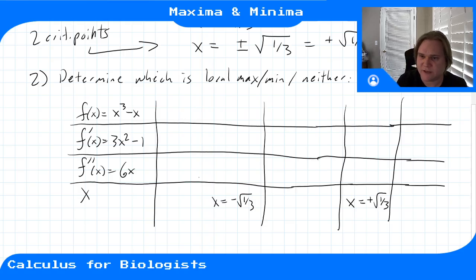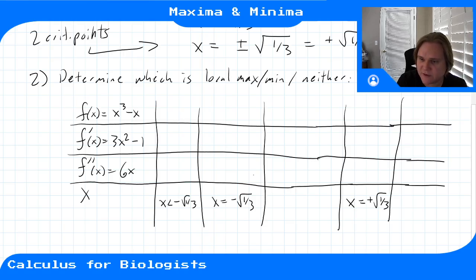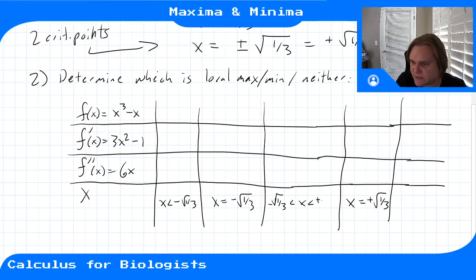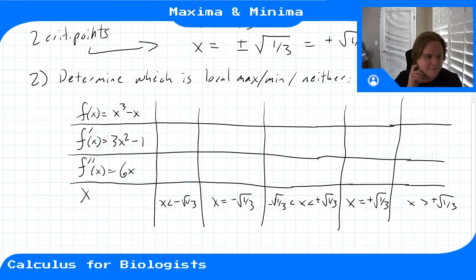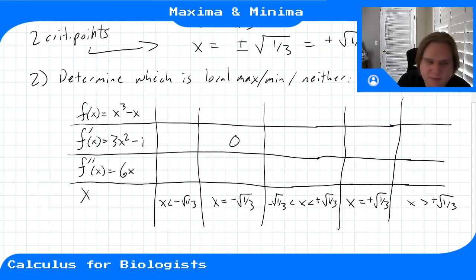The interval columns are: x < -√(1/3), then -√(1/3) < x < +√(1/3), and then x > +√(1/3). The derivative is zero at each critical point, and we want to classify each as a local max or local min.